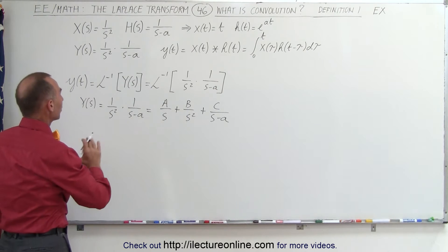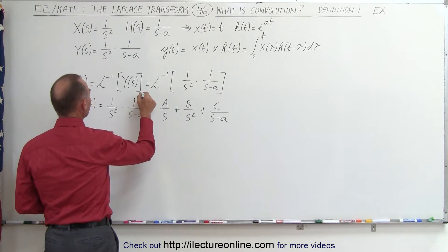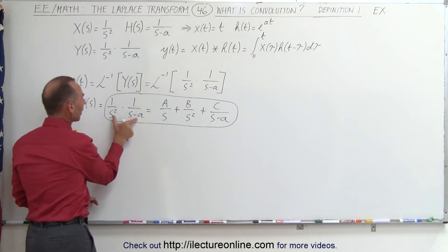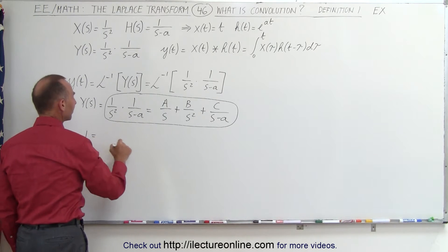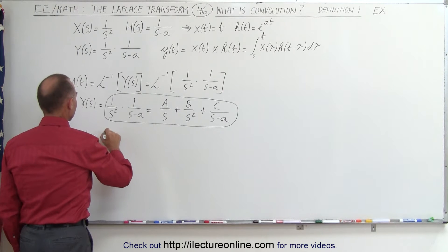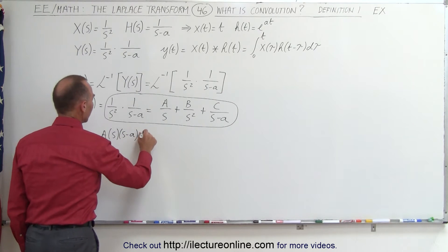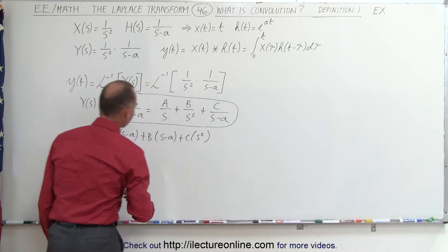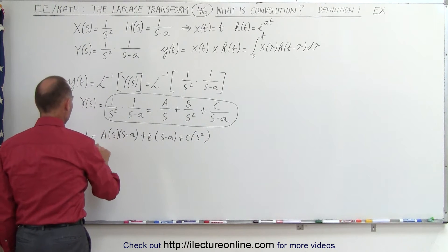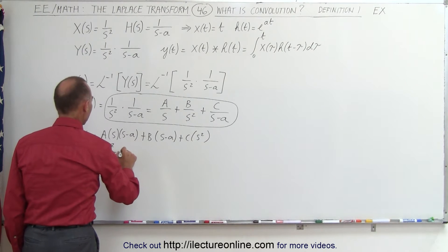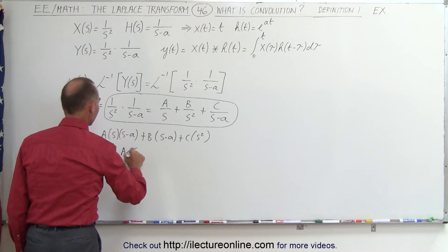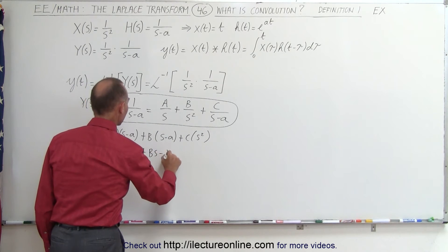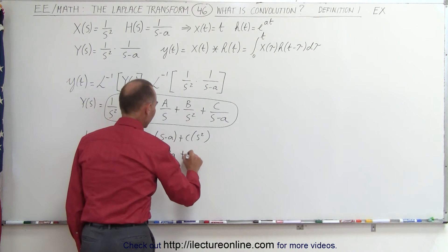To do that, we need to multiply both sides of the equation by the common denominator. Taking this equation and multiplying both sides by the product of s² and (s - a), on the left side we get 1, and on the right side we get A times s times (s - a), plus B times (s - a), plus C times s². Working this out, we get: 1 equals A·s² minus A·a·s plus B·s minus B·a plus C·s².